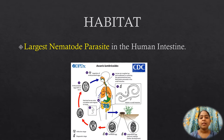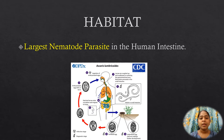Habitat. The adult worm resides in the small intestine — majorly 85% in the jejunum and 15% in the ileum. Ascaris lumbricoides is the largest nematode parasite in the human intestine.